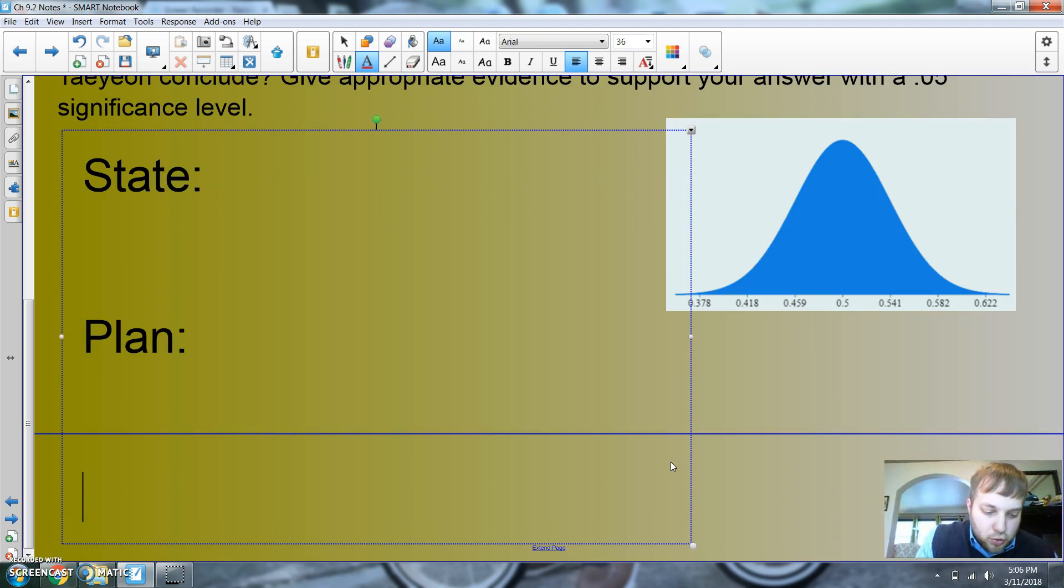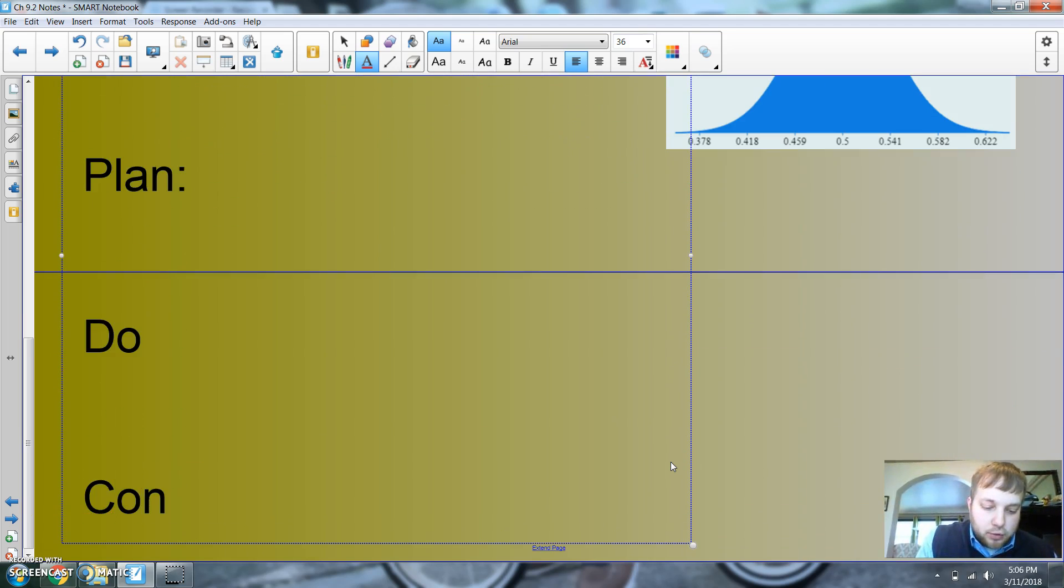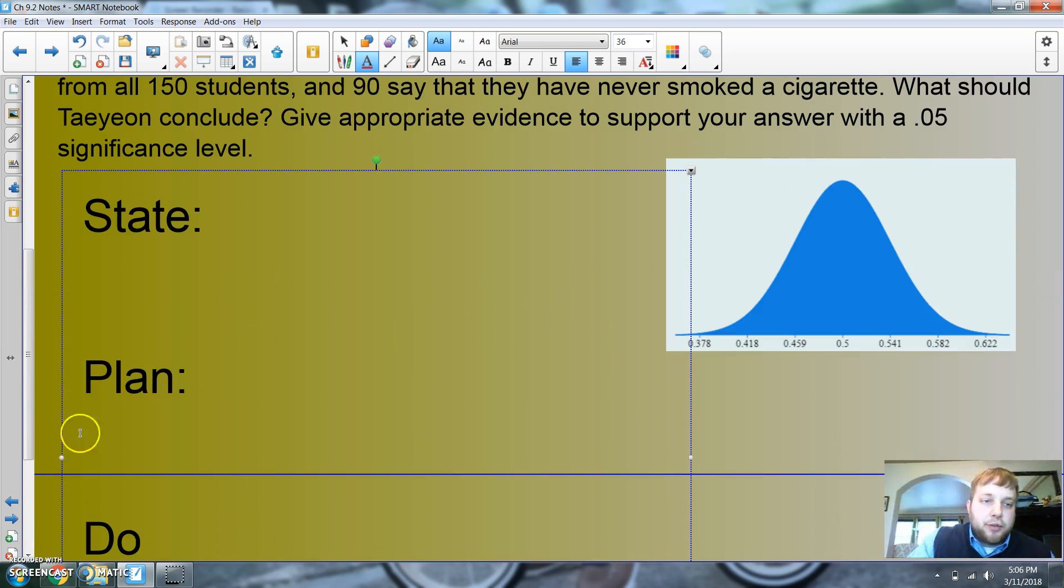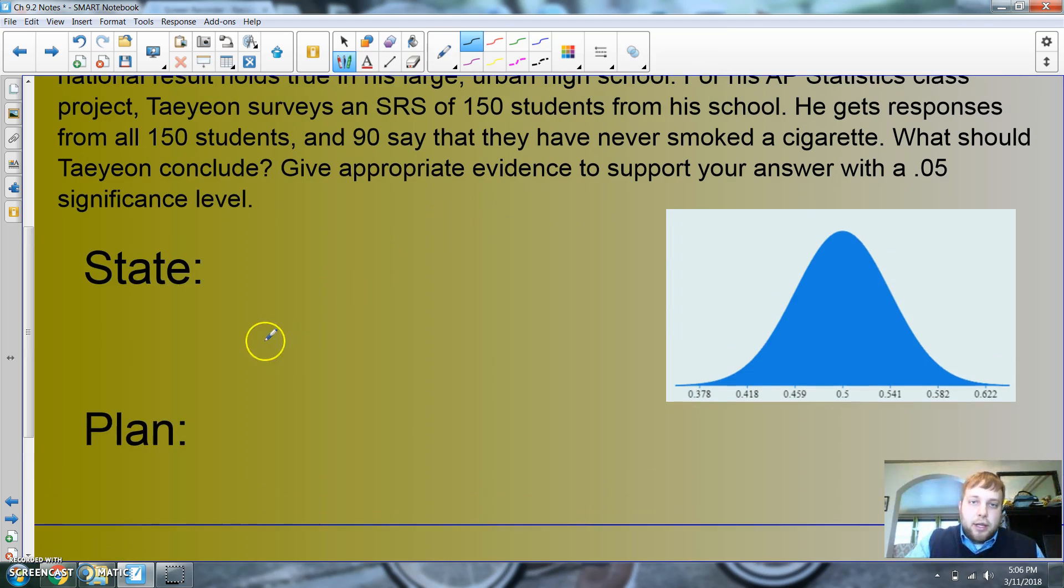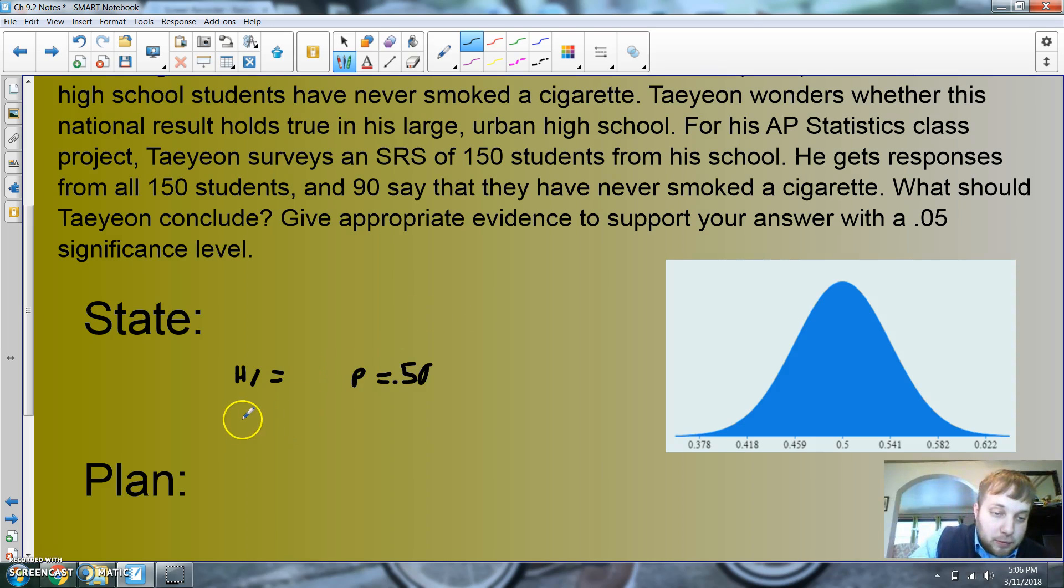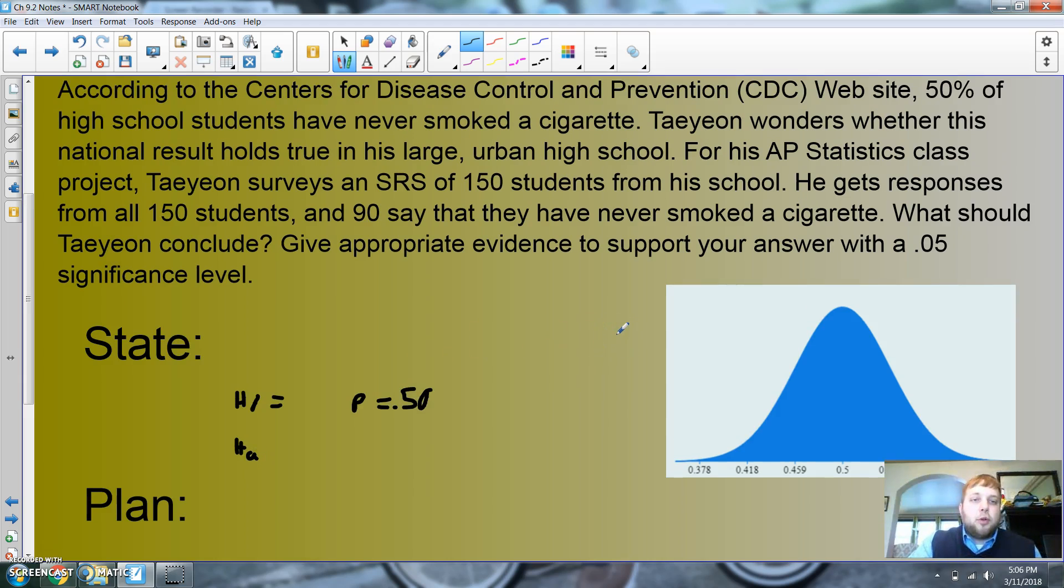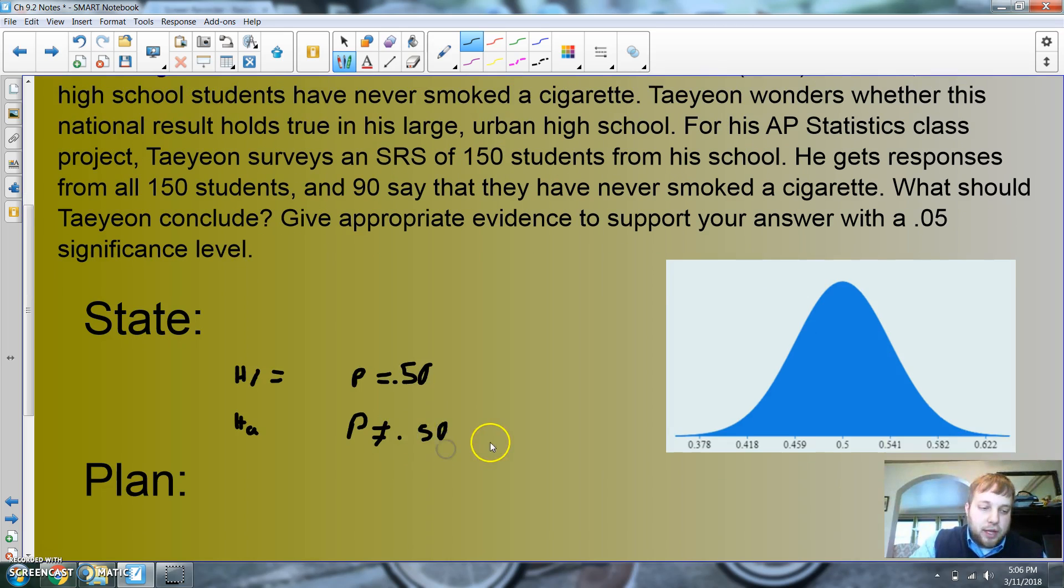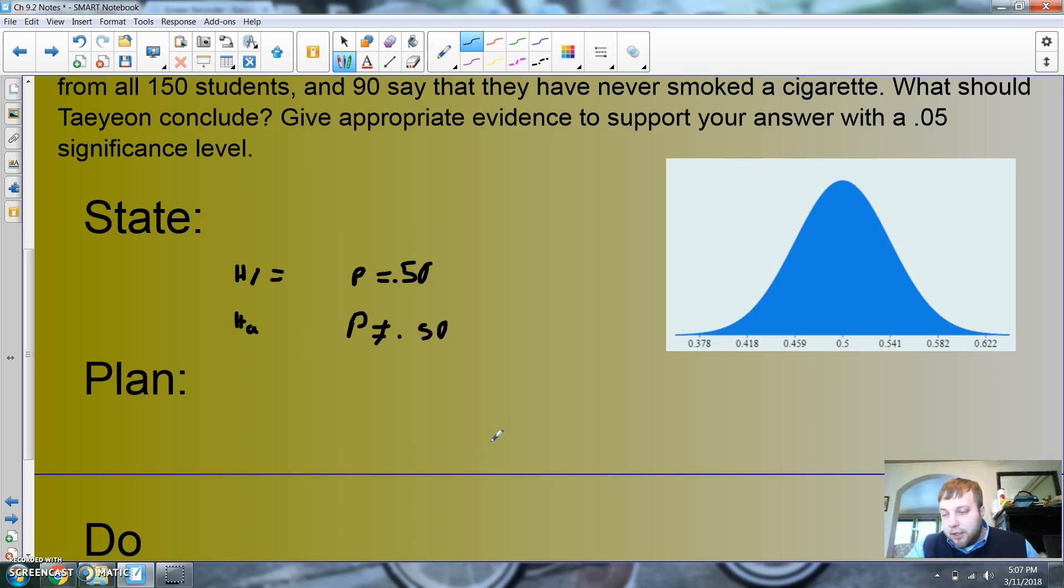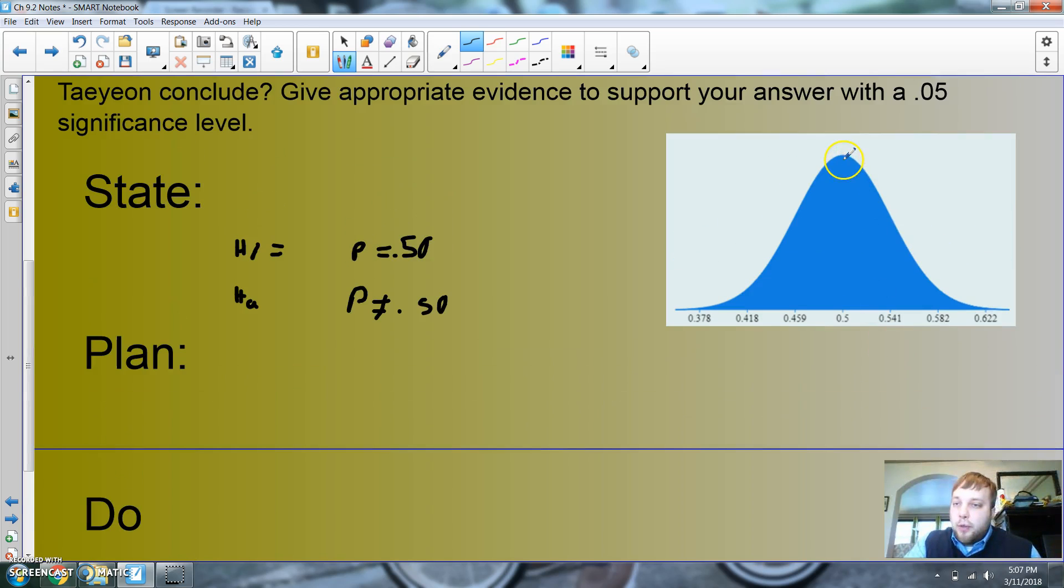It should pass my state and plan. We're gonna go state. I'm not gonna state it out, but I will write my hypothesis. My plan, I'm not going to take the time to do that. My do, yes, we'll do that and hopefully we'll have time to conclude. So under state, my hypothesis that I'm going to put here is that I am going to assume my H0 is p = 50%, because that's where the national average says teenagers who've never smoked is 50%. That means my Ha, it just says he's wondering whether this national result holds true. So we're not looking for higher or lower. This would be a not equal to.